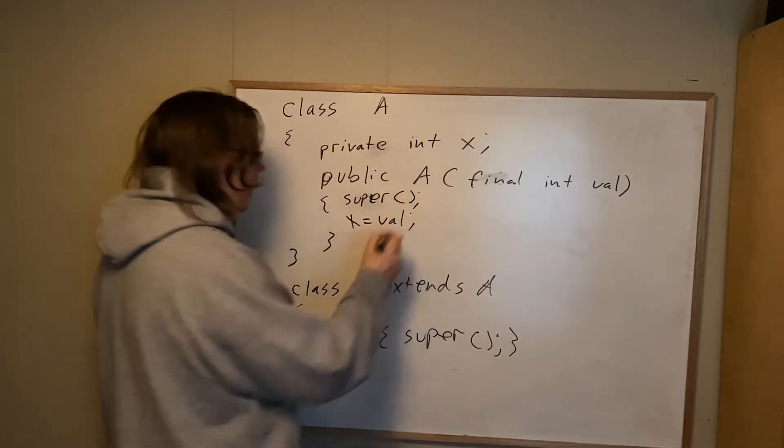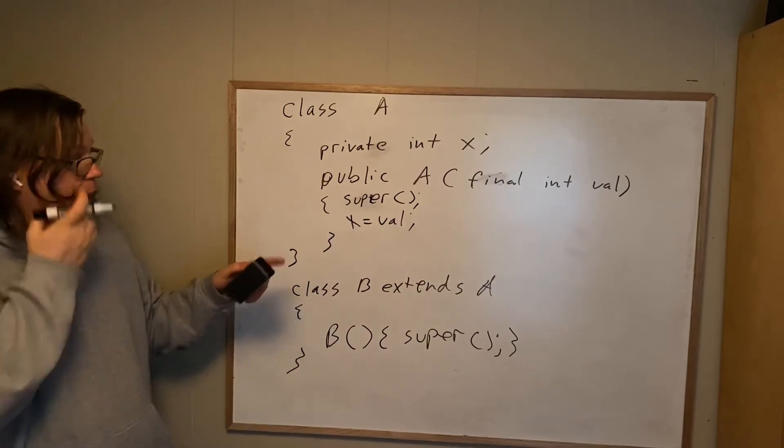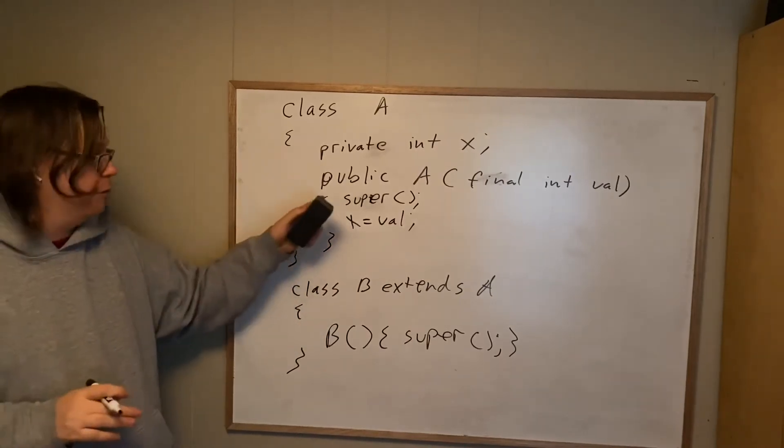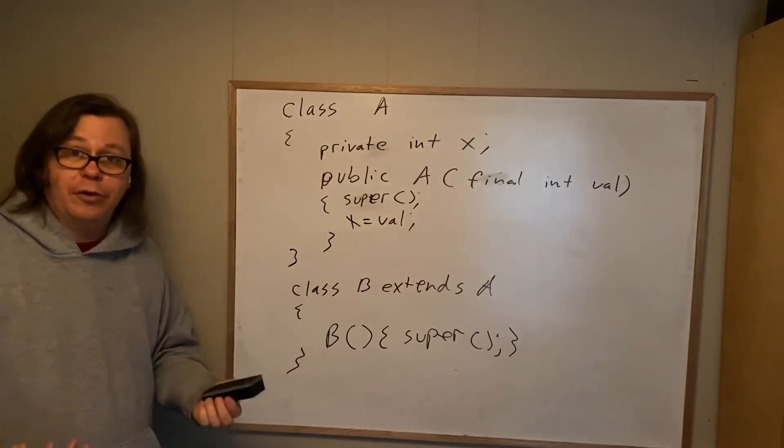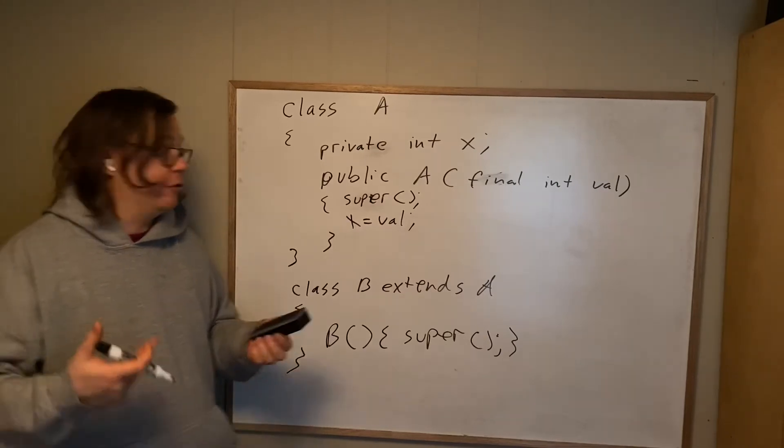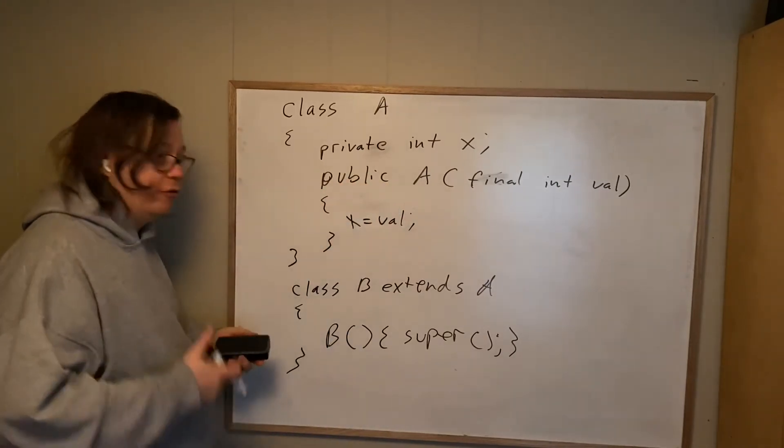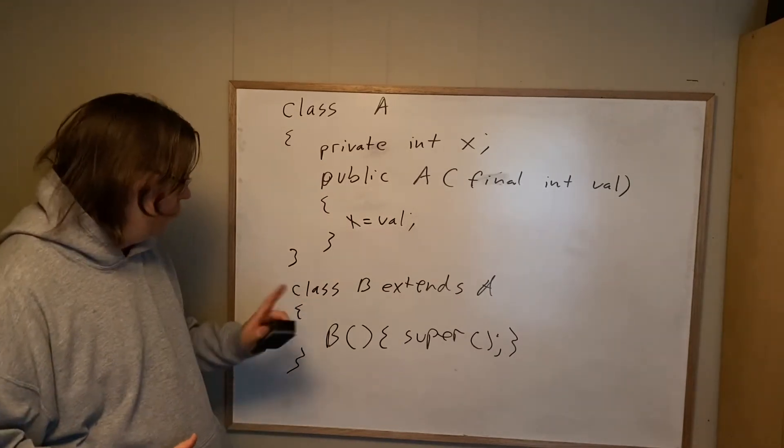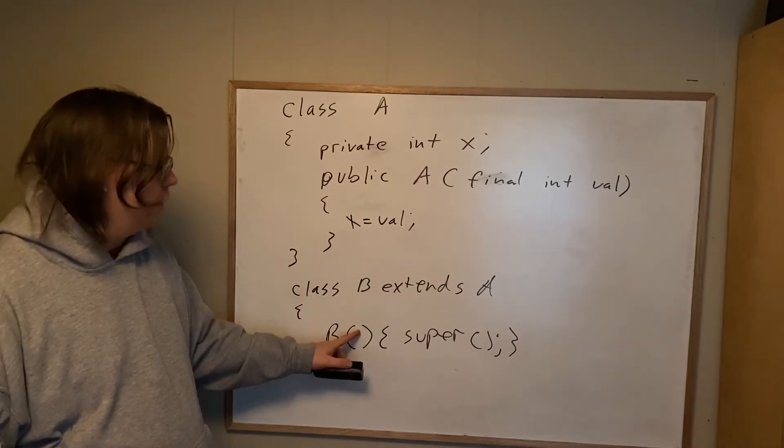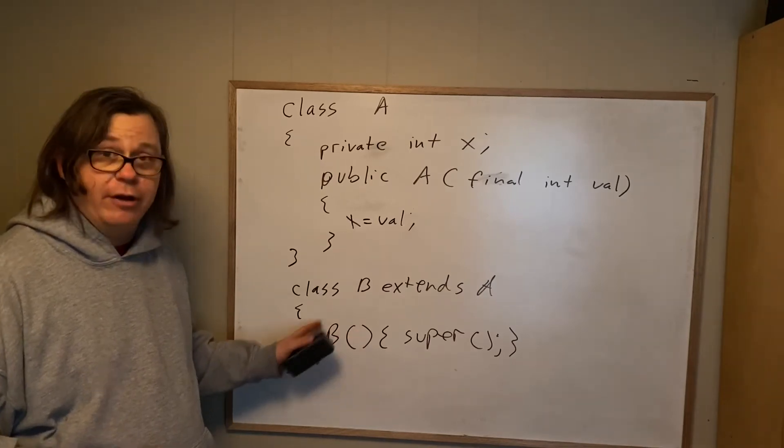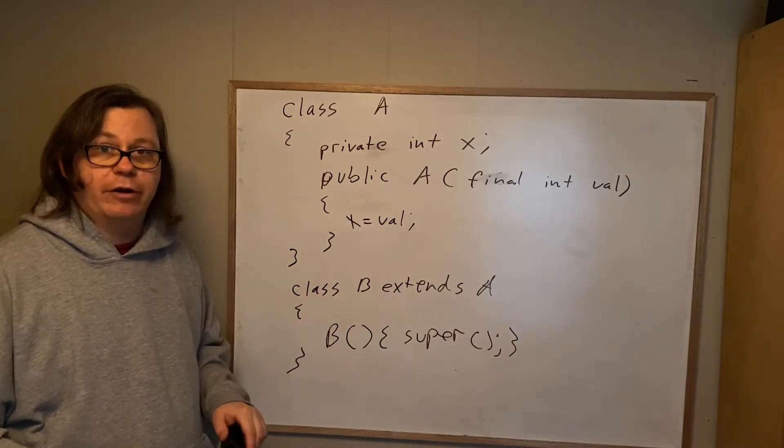super is the very first thing in the constructor, right? So the very first line of every constructor must be a call to super. If you don't put that in explicitly, the compiler is going to put it in for you with no arguments. So it calls the no-arg constructor. So the no-arg constructor is a constructor that takes no arguments. The default constructor happens to be a no-argument constructor.